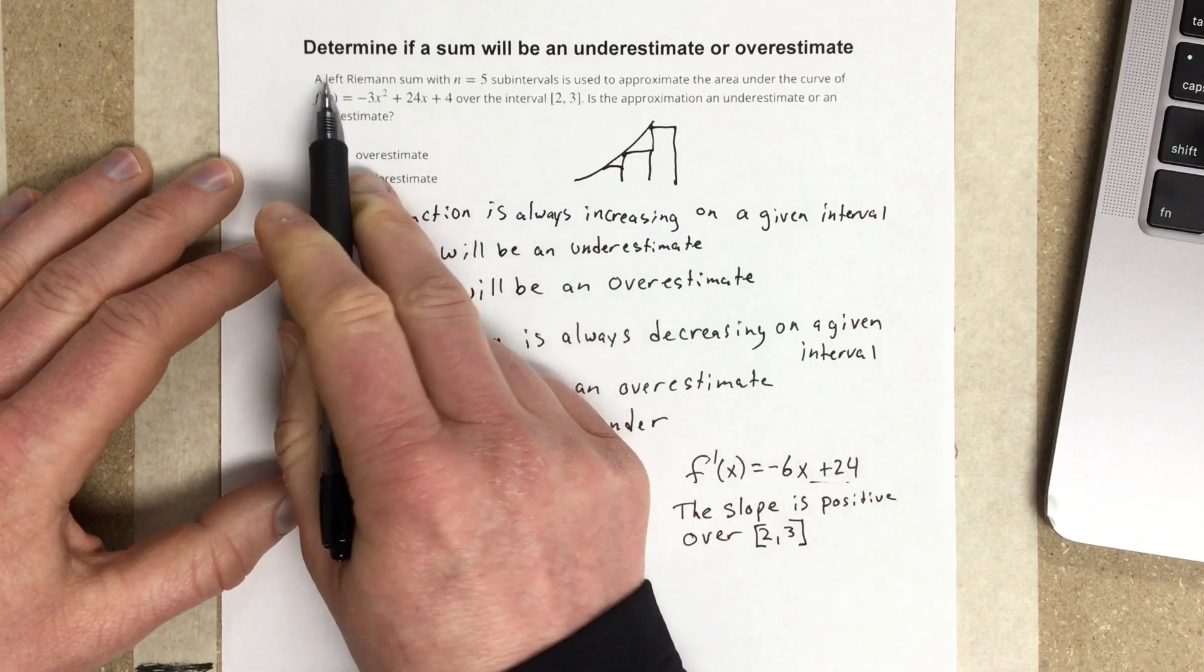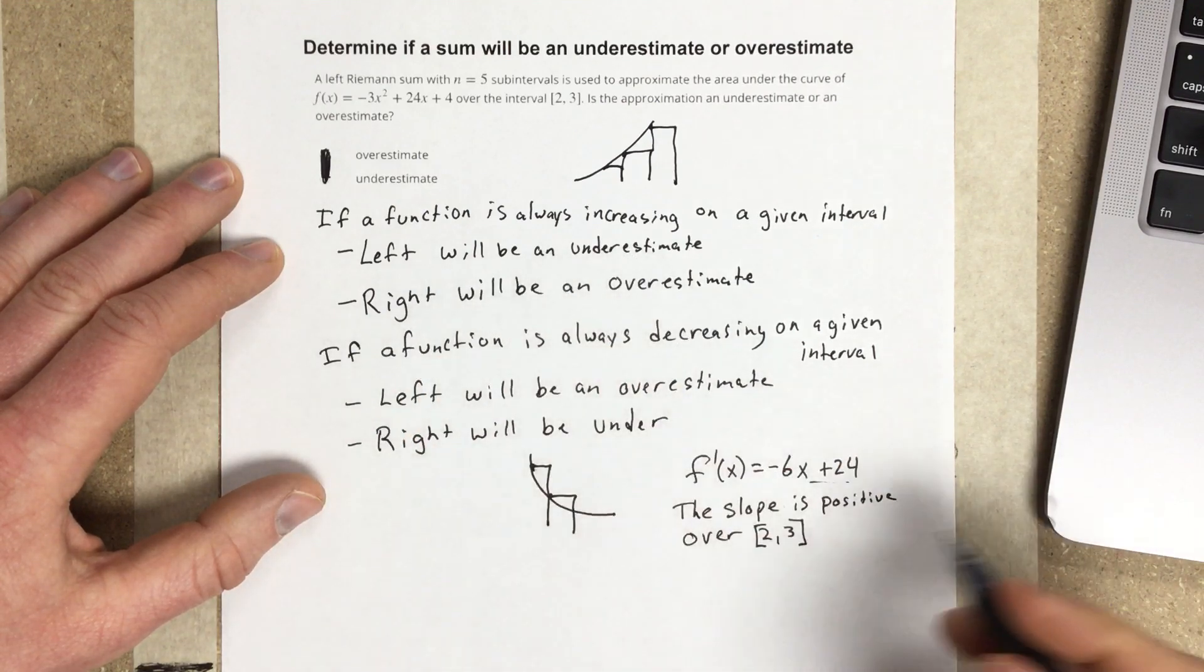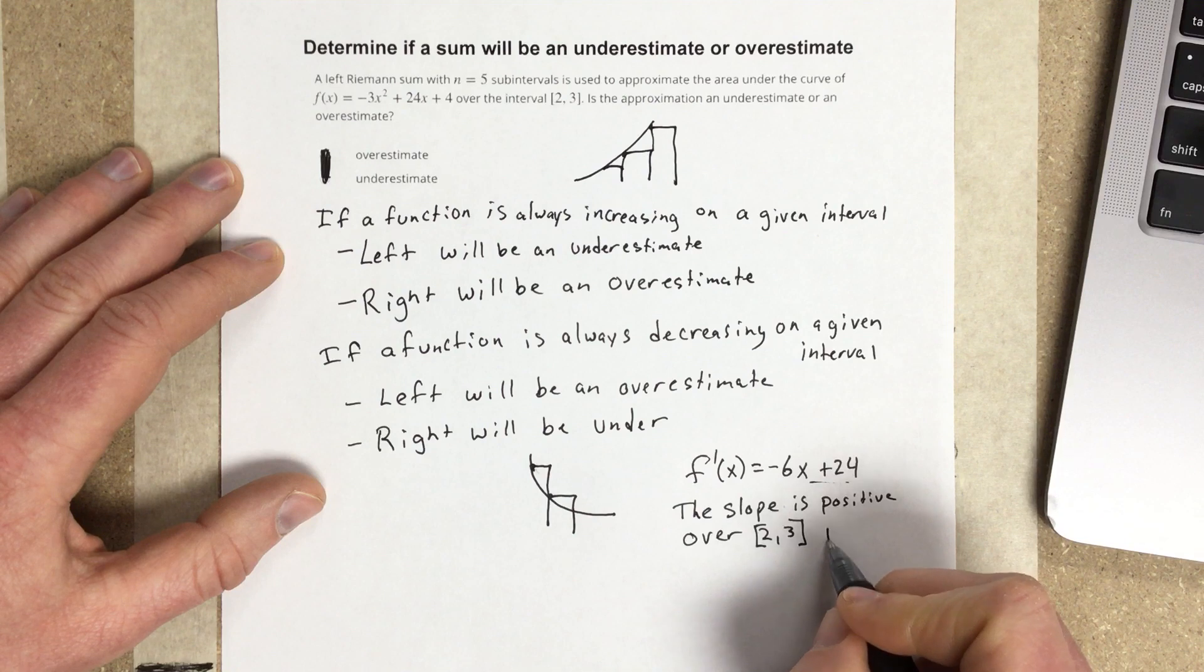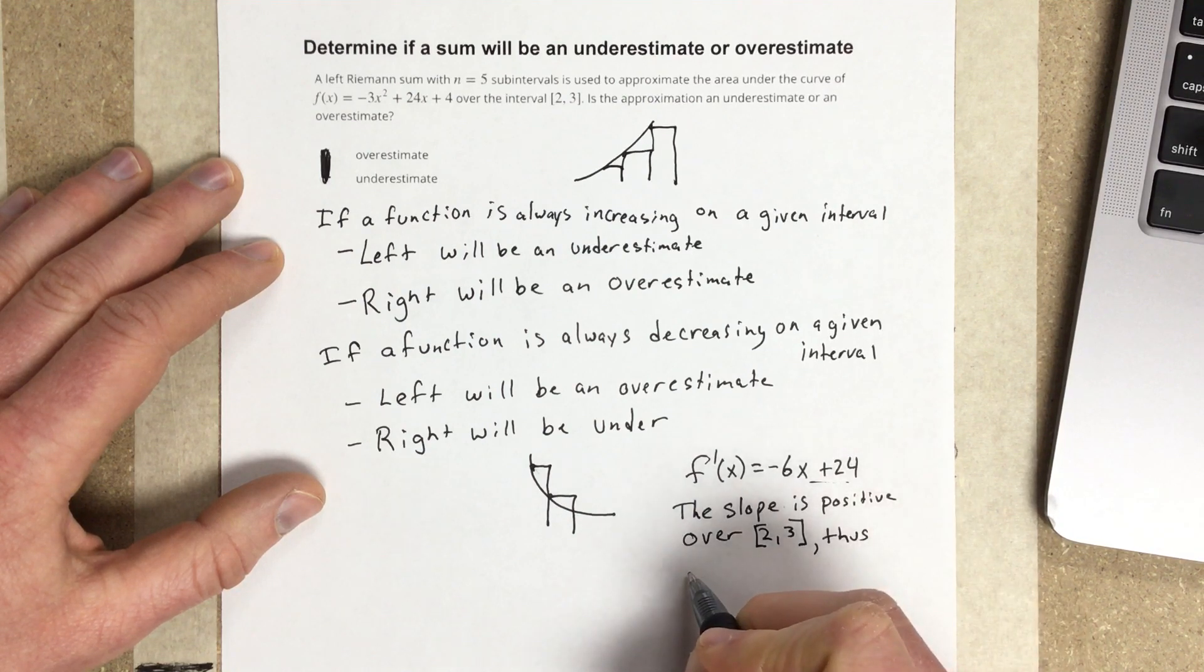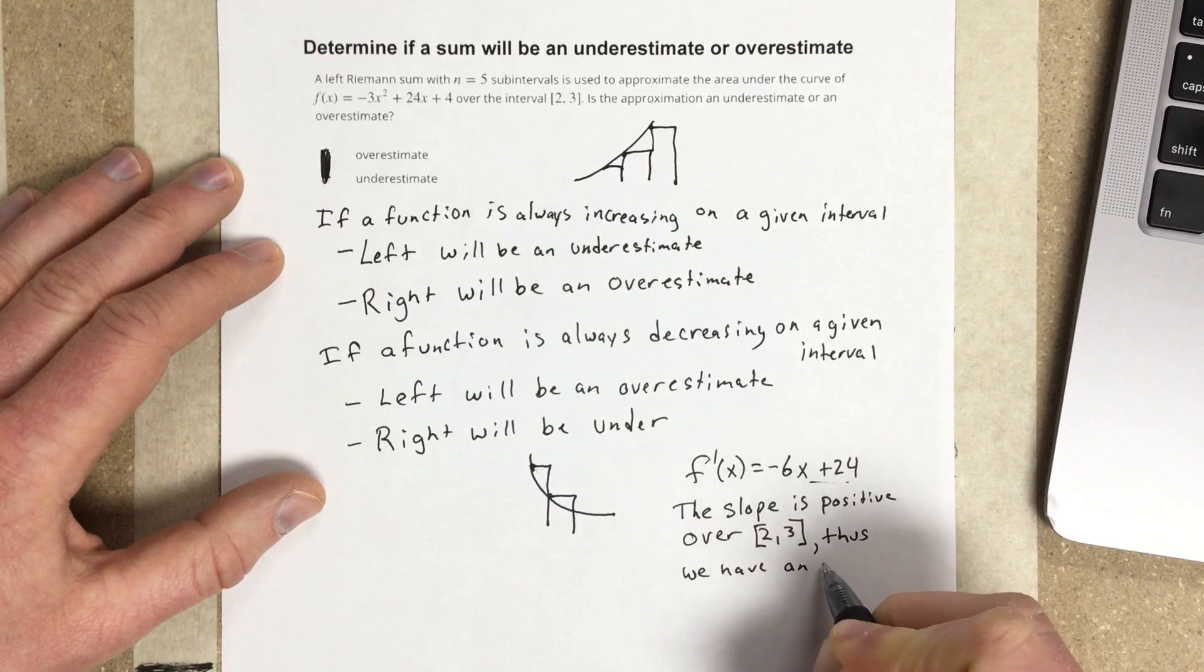So if we're doing a left Riemann sum and the slope is always positive, then that's an underestimate. Therefore, we have an underestimate.